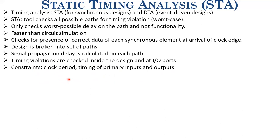The constraints include the clock period, which defines the maximum frequency of operation, and there can also be some primary input/output constraints in specialized circuits. The clock period is the key constraint. As a consumer, if I say my processor has to work at 3 GHz, the STA tool will break the microprocessor design into several paths, calculate delay at each of those paths, and find the maximum frequency or minimum clock period for which the timing constraints are satisfied for all paths.